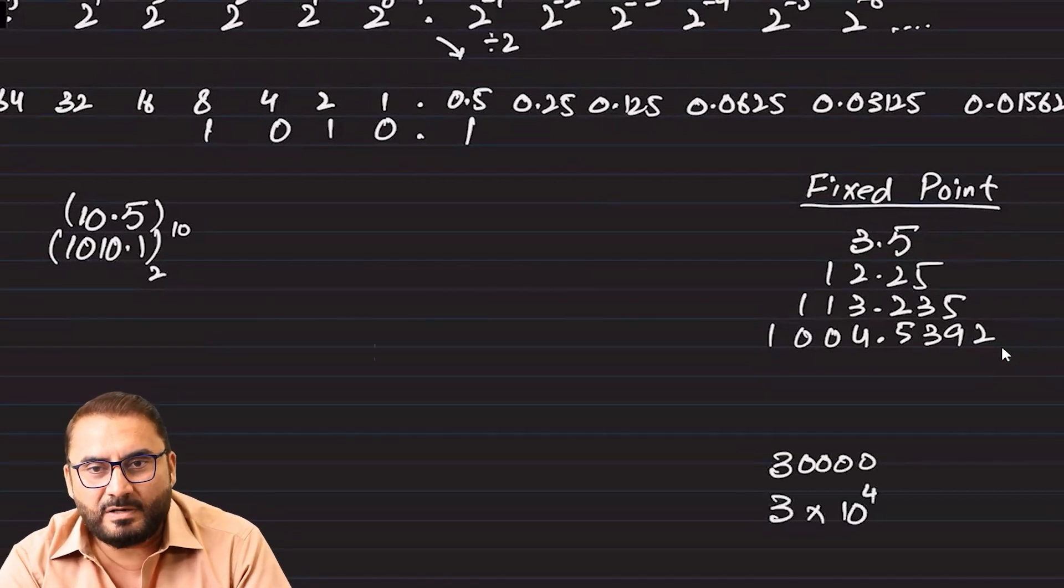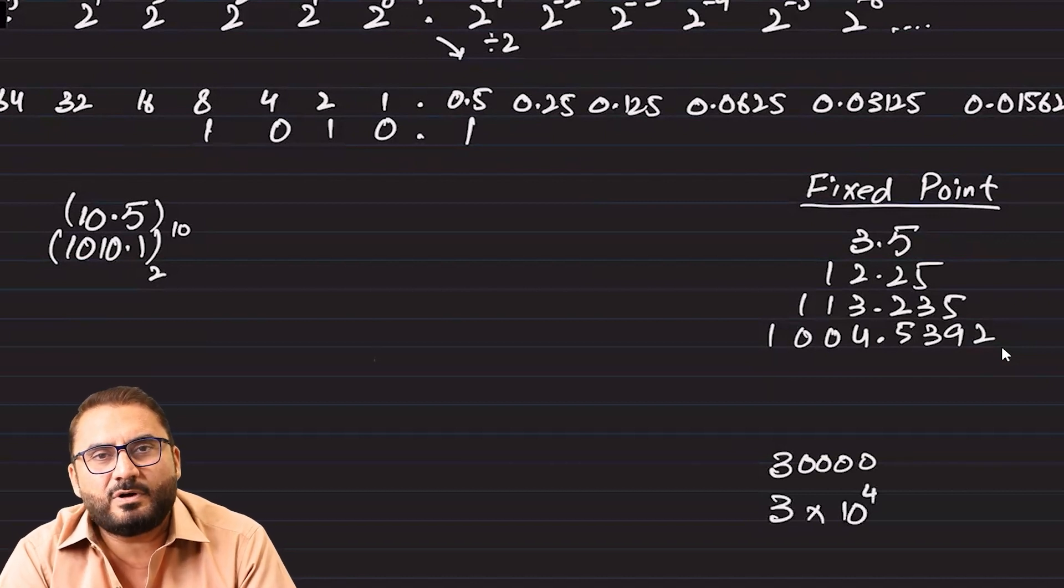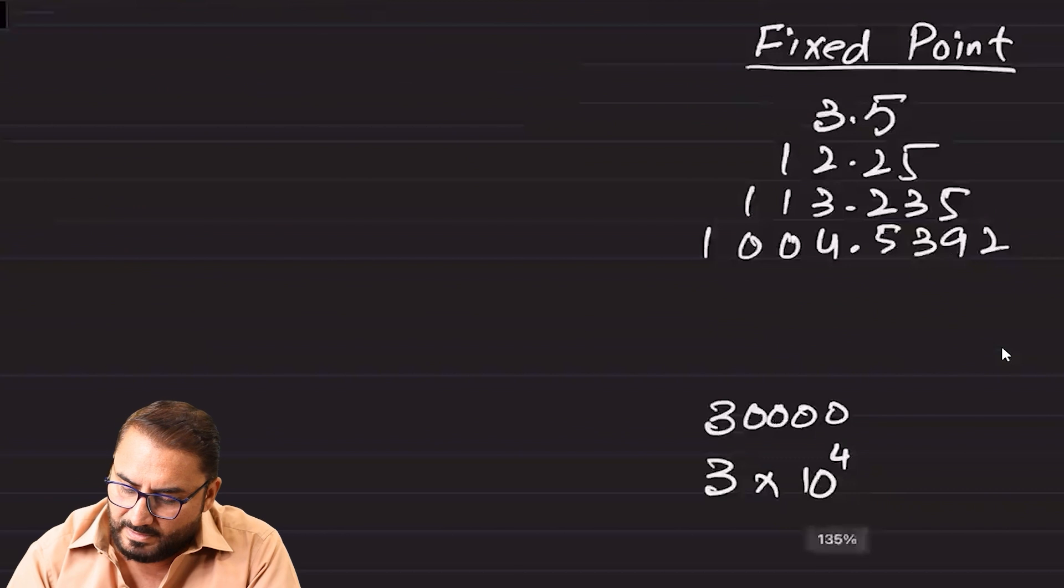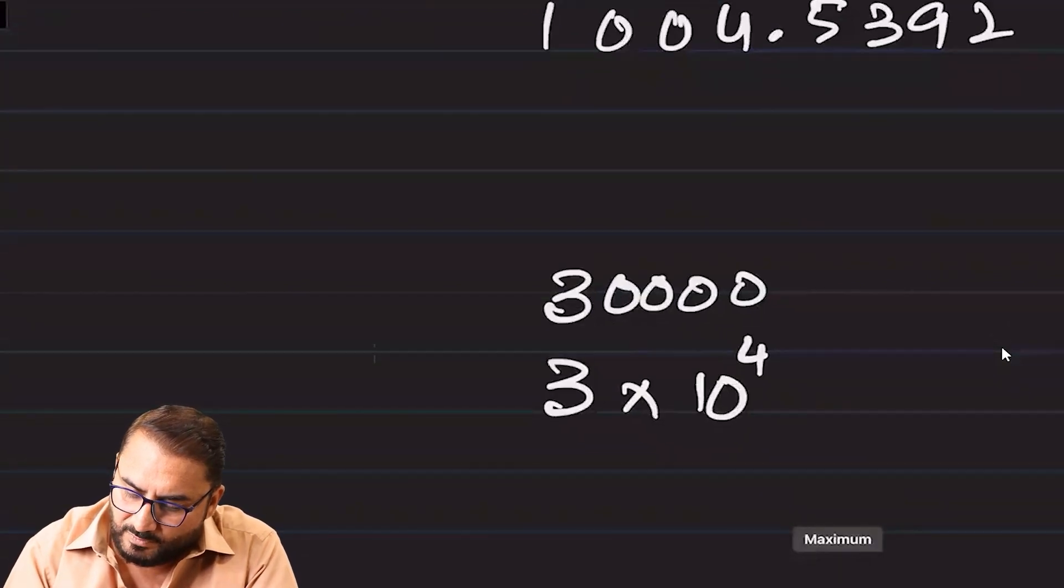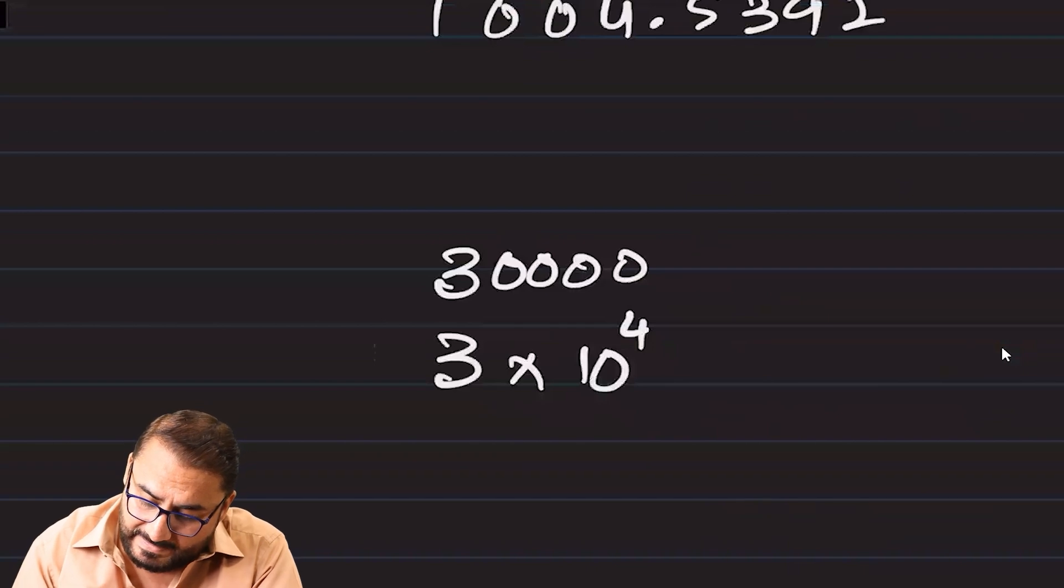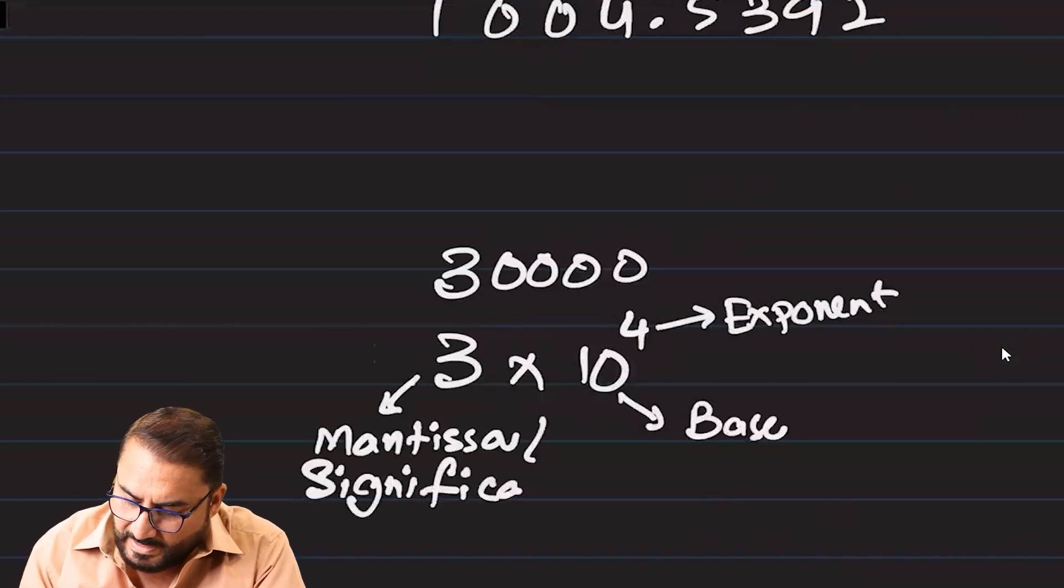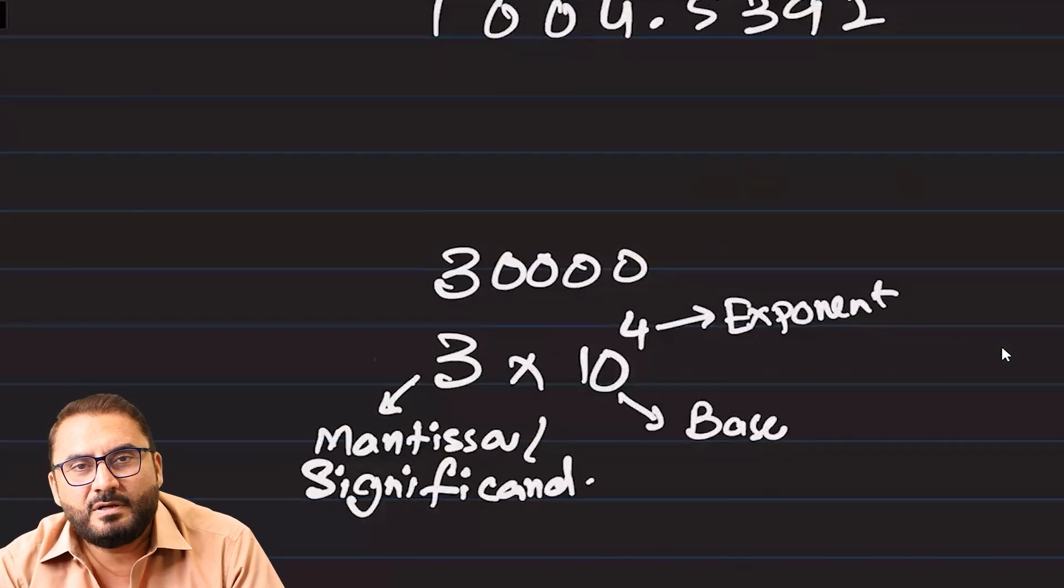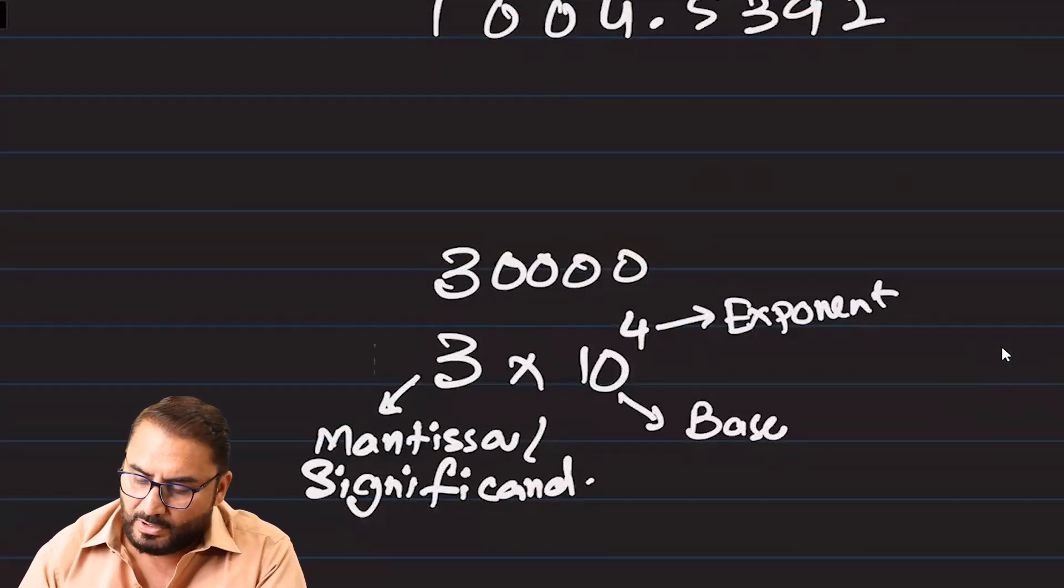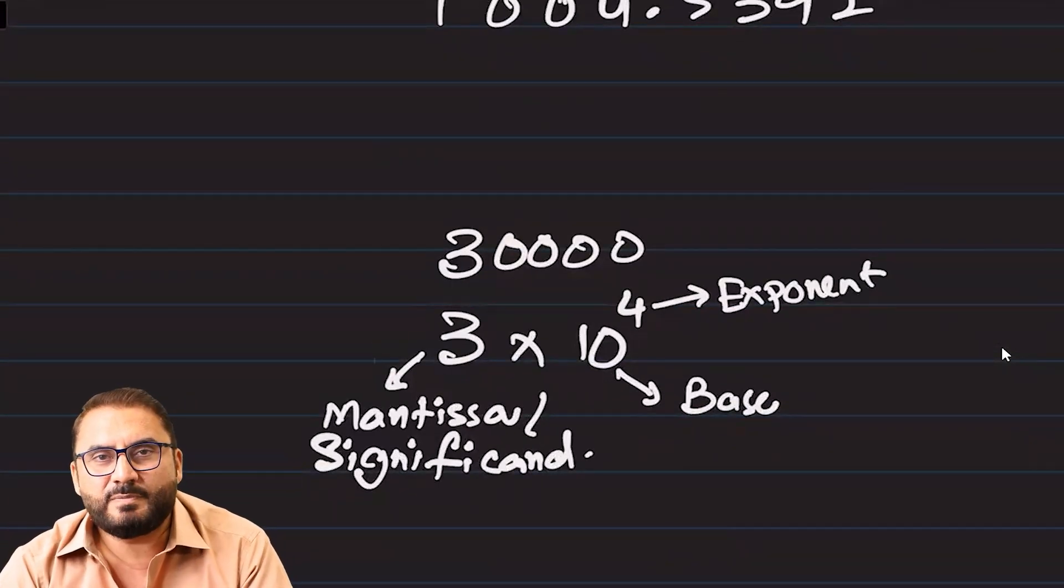So now we have to convert it in standard form for computers, we call it general form. For mathematics students we call it standard form. Now in standard form, 4 is said to be exponent, this 10 is said to be base, this 3 is said to be mantissa. Another name is given which is called significant, s-i-g-n-i-f-i-c-a-n-d, but we don't use this word rather we use mantissa.